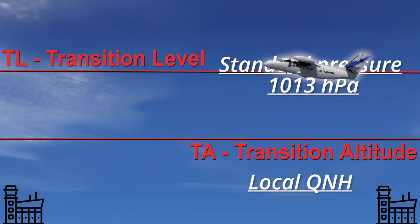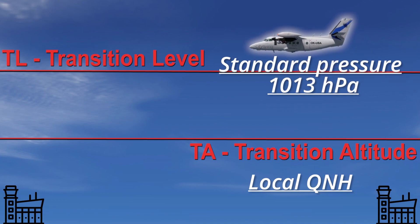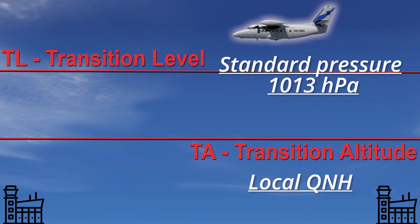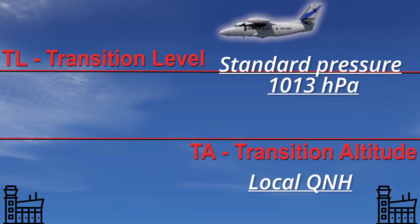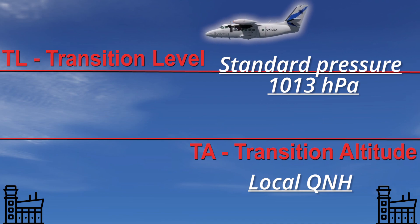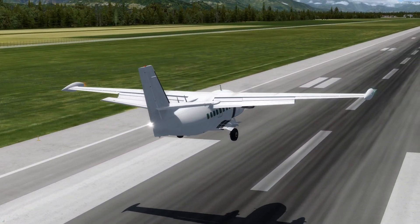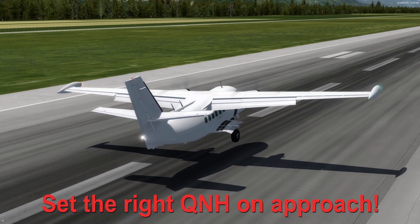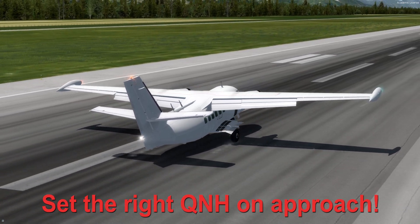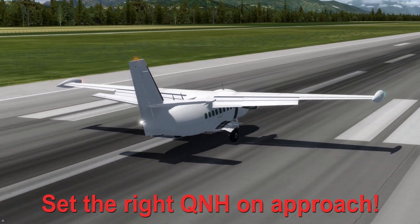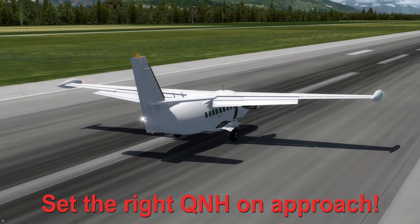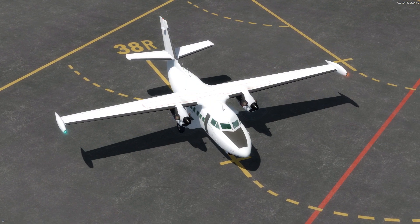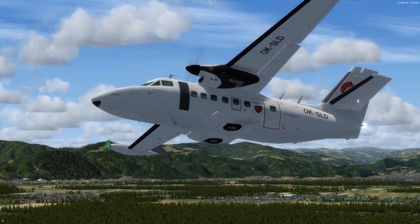If you want to know more about QNH usage and about transition altitude or transition level, take a look at my previous video linked at the top of your screen right now. The QNH setting is also crucial on approach, as if your QNH value is incorrect you could be too low or too high on approach. There have also been numerous accidents due to wrong QNH settings.